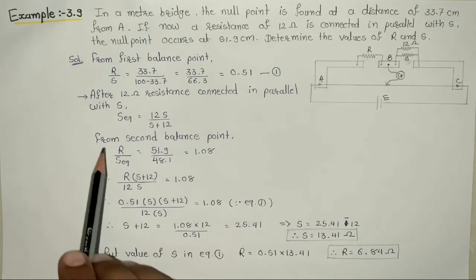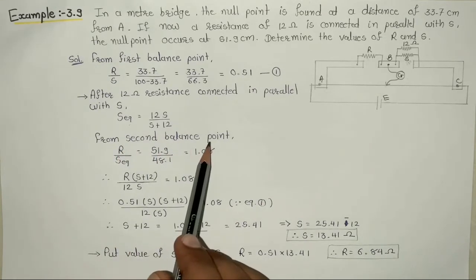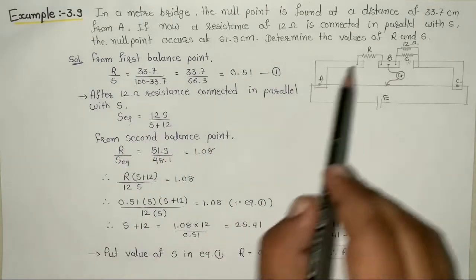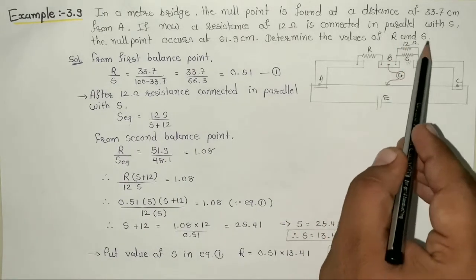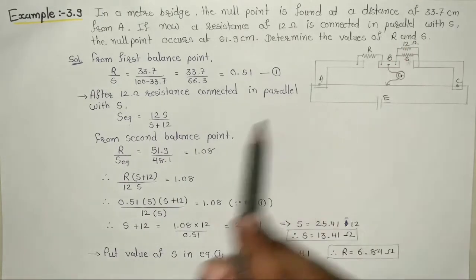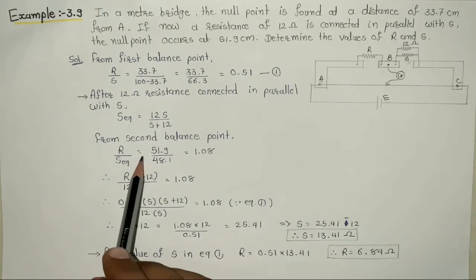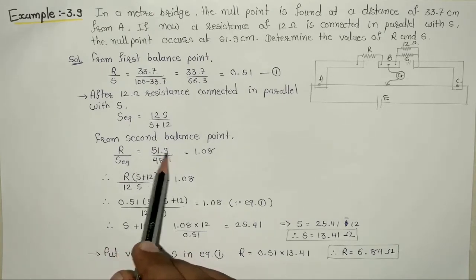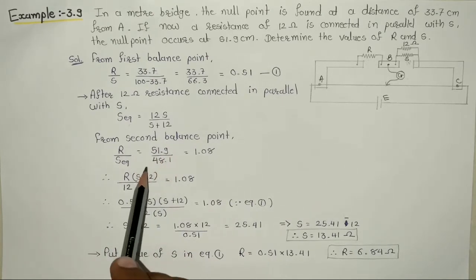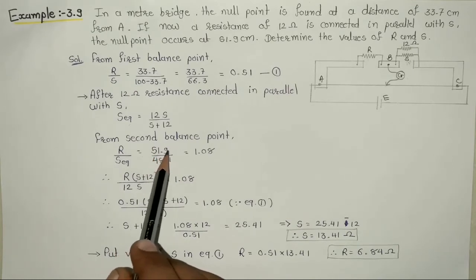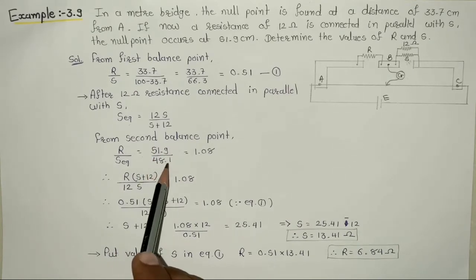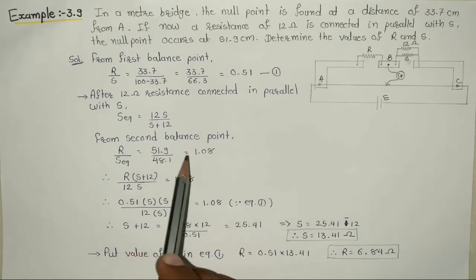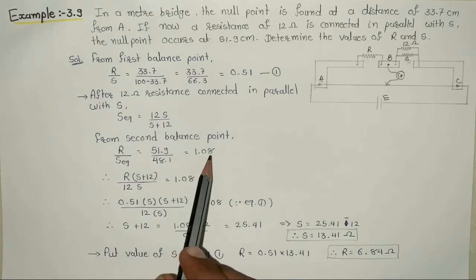Now, for the second balance point, balance bridge का equation होगा R upon S equivalent. Null point मिल रहा है 51.9 cm, तो L2 होगा 100 minus 51.9 equal to 48.1. Divide करेंगे तो answer मिल रहा है 1.08.